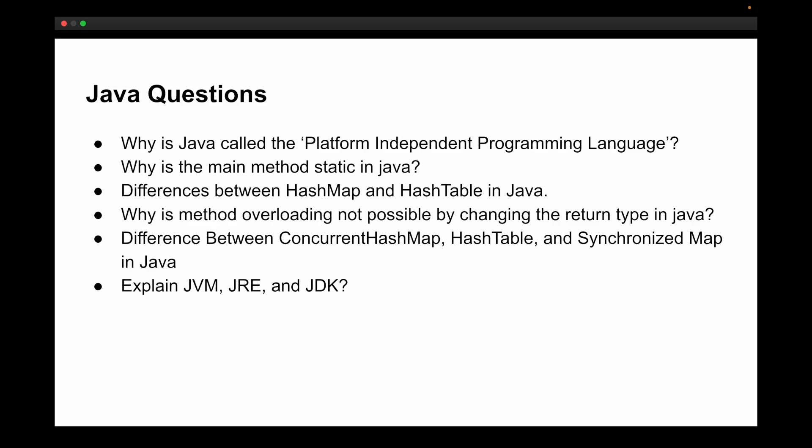The Java questions asked were: Why is Java called a platform-independent programming language? Why is the main method static in Java? What are the differences between HashMap and HashTable? Why is method overloading not possible by changing the return type? What is the difference between ConcurrentHashMap, HashTable, and SynchronizedMap? And explain JVM, JRE, and JDK. You only need to answer two of these questions, so pick whichever you know best.